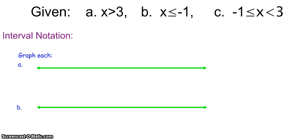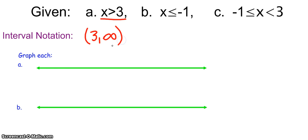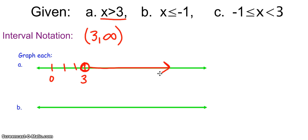Our first example says x is greater than 3. That means 3 is going to be the smallest number, but I'm not actually going to include it — I can have everything bigger than 3. On the number line, I don't want to include 3 but I want everything bigger. Not including 3 means I do include 3.00000000001 — everything so close to 3, just not 3 itself.